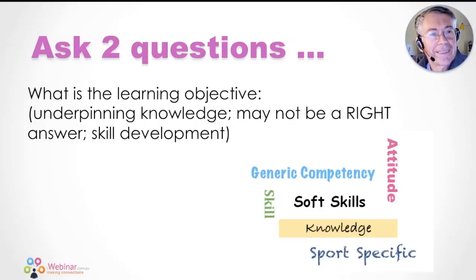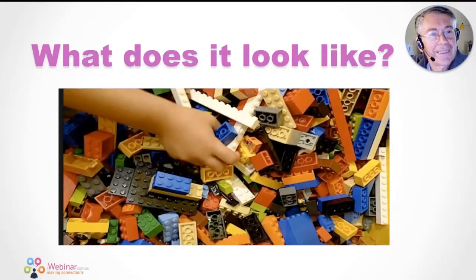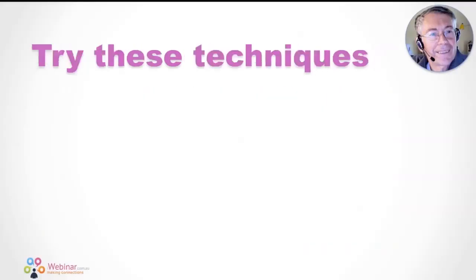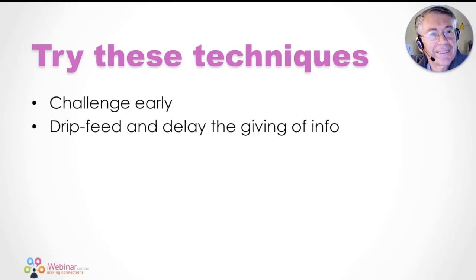Step two: you'll need to get a sieve — mine's under the sink — because what I want you to do is filter through all the potential underpinning knowledge that might support that destination. We want to filter out the need-to-know stuff from the nice-to-know stuff. A useful checklist: can we make a plan with the information? Can we say something to an athlete or official on the field? Can we use the information to demonstrate something? Once you've got a destination and filtered the information, it's about how to facilitate a session using those tools.